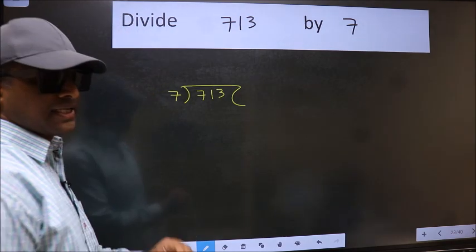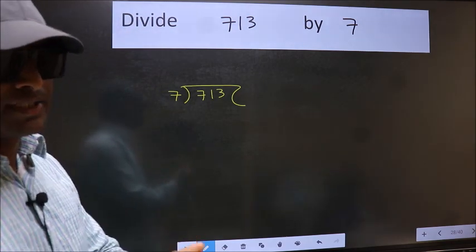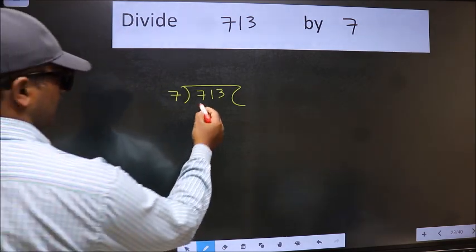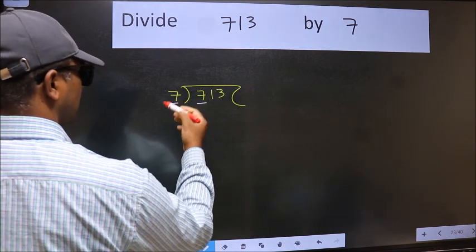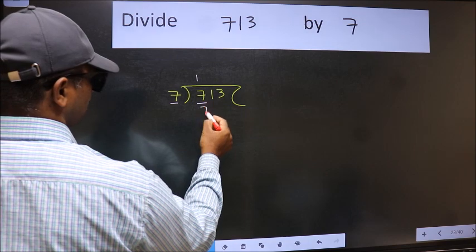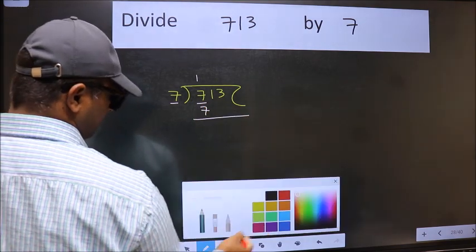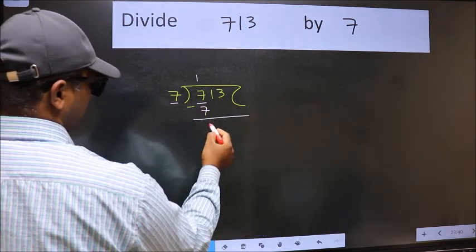This is your step 1. Next, here we have 7 and here 7. When do we get 7 in the 7 table? 7 once 7. Now we should subtract. We get 0.